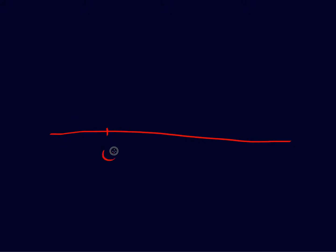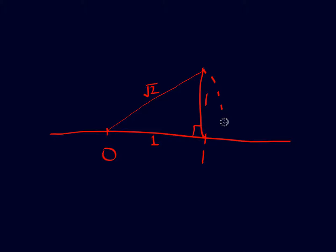Now let us see how to draw some of these on the number line. Let's say you want to draw square root of 2. You have 0 and 1, and if you draw a straight line of length 1 upward, and connect these two points, then by Pythagoras' theorem the length of the hypotenuse is square root of 2. If you take a compass and draw an arc which intersects the number line, that point on the number line is square root of 2.